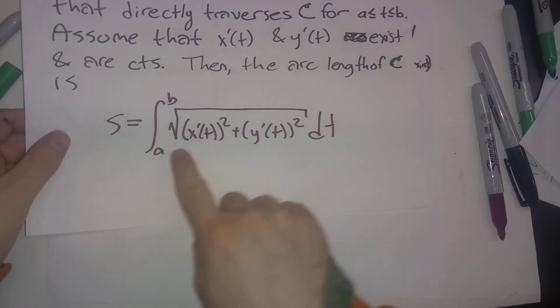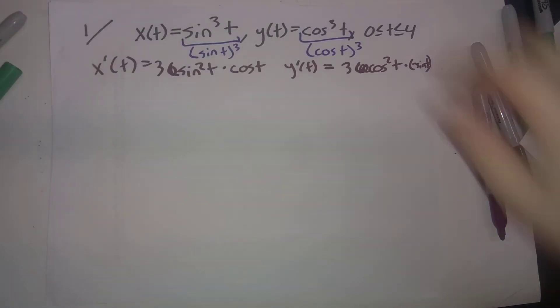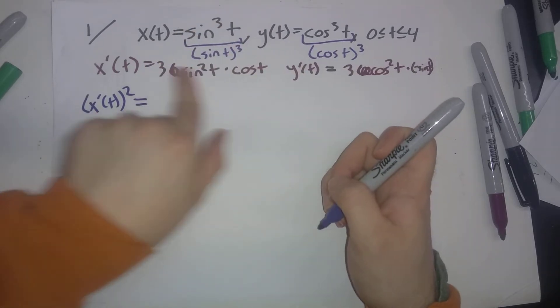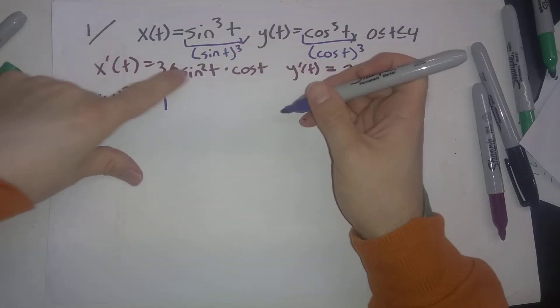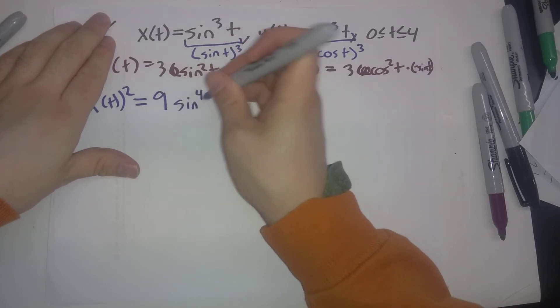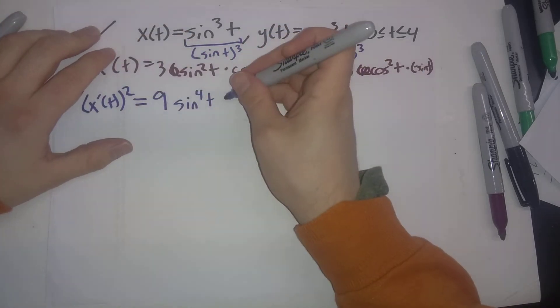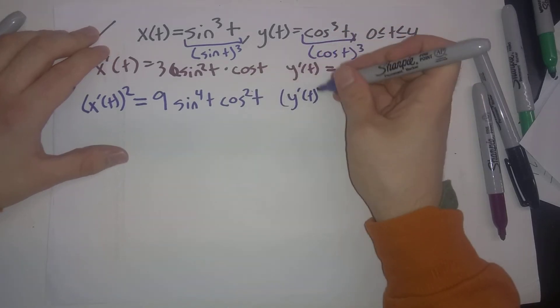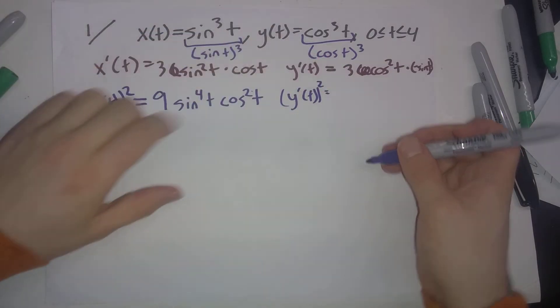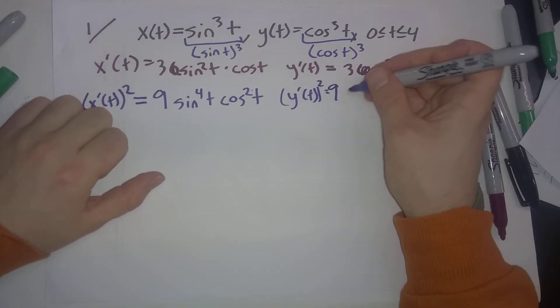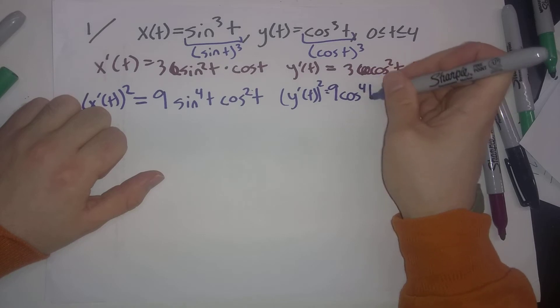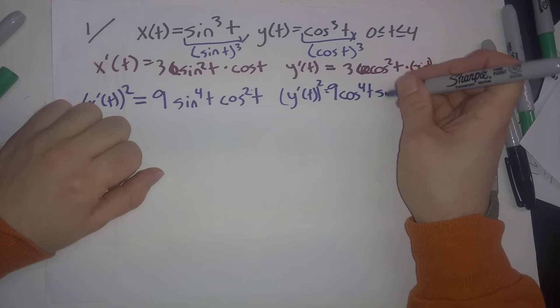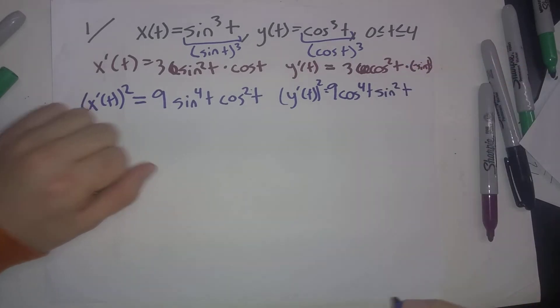We don't care about x' and y' by themselves—we want to square them. x'(t)²: When we square this, 3² gives us 9, sin²t gives us sin⁴t, and squaring cos t gives us cos²t. y'(t)²: Squaring 3 gives us 9, squaring cos²t gives us cos⁴t, and squaring -sin t gives us positive sin²t.